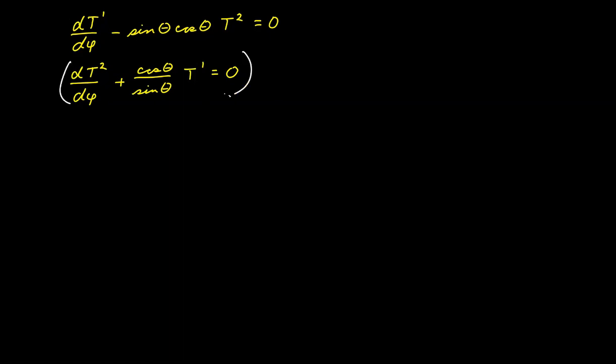Then you'd repeat the process the other way. You'd take this derivative with respect to phi, solve for DT1 with respect to phi, substitute that back here. And that'll give you a second-order differential equation in T2, and you can solve that one.